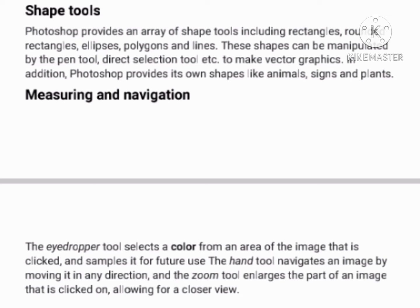Shape tools: Photoshop provides an array of shape tools and includes rectangles, rounded rectangles, ellipses, polygons, and lines. These shapes can be manipulated by the pen tool and direct selection tool. It is easy to make vector graphics in Photoshop, which also provides its own custom shapes like animals, signs, and plants.